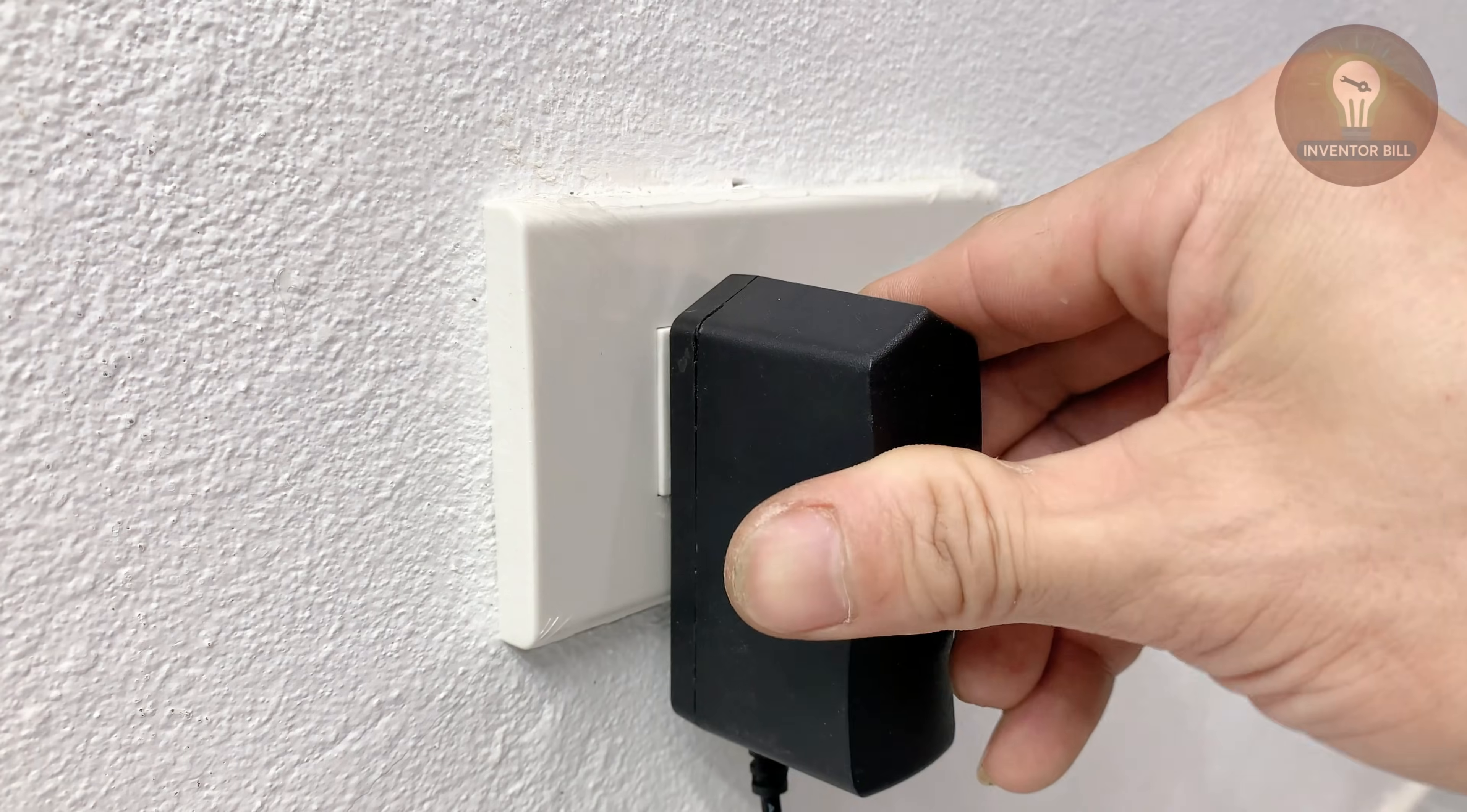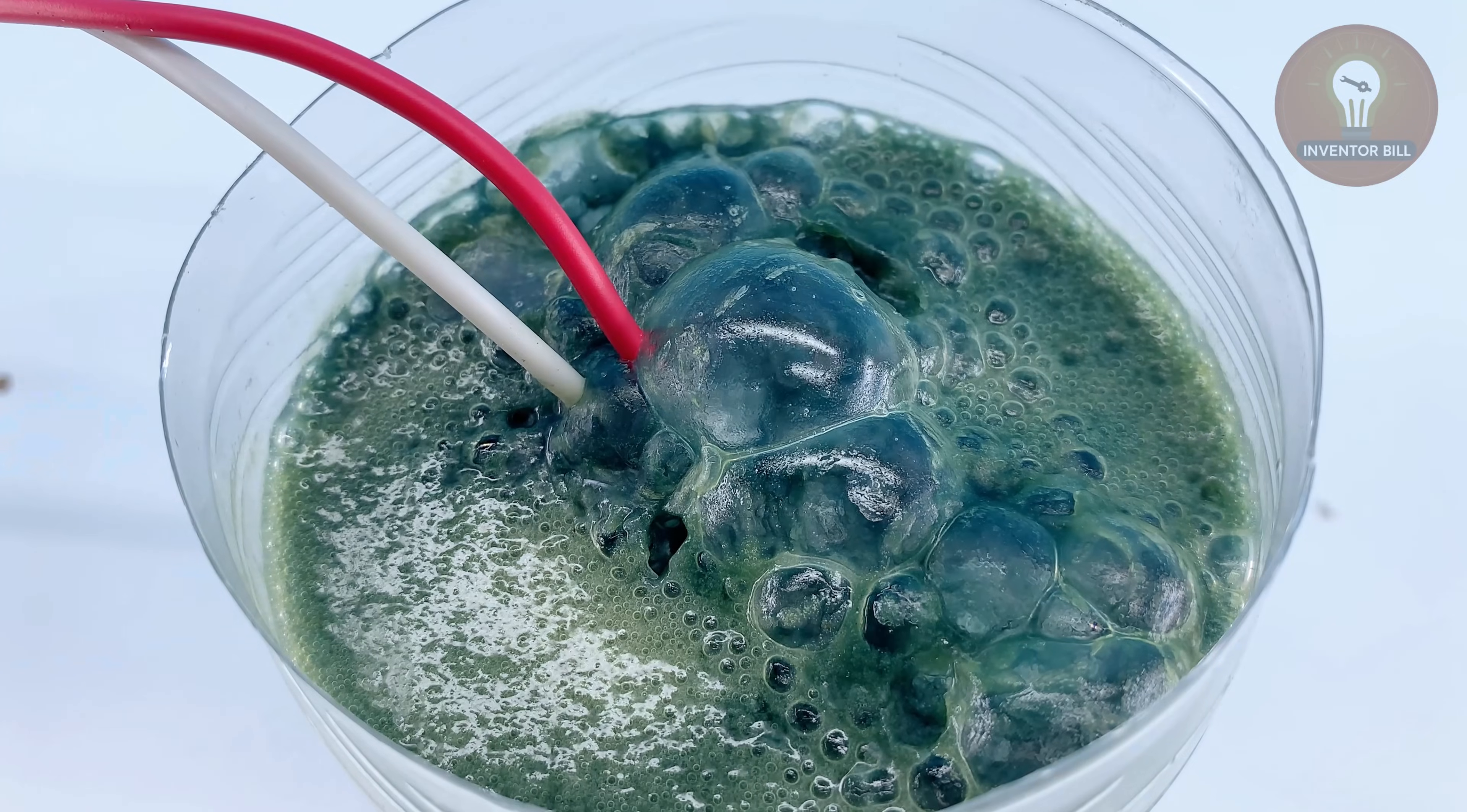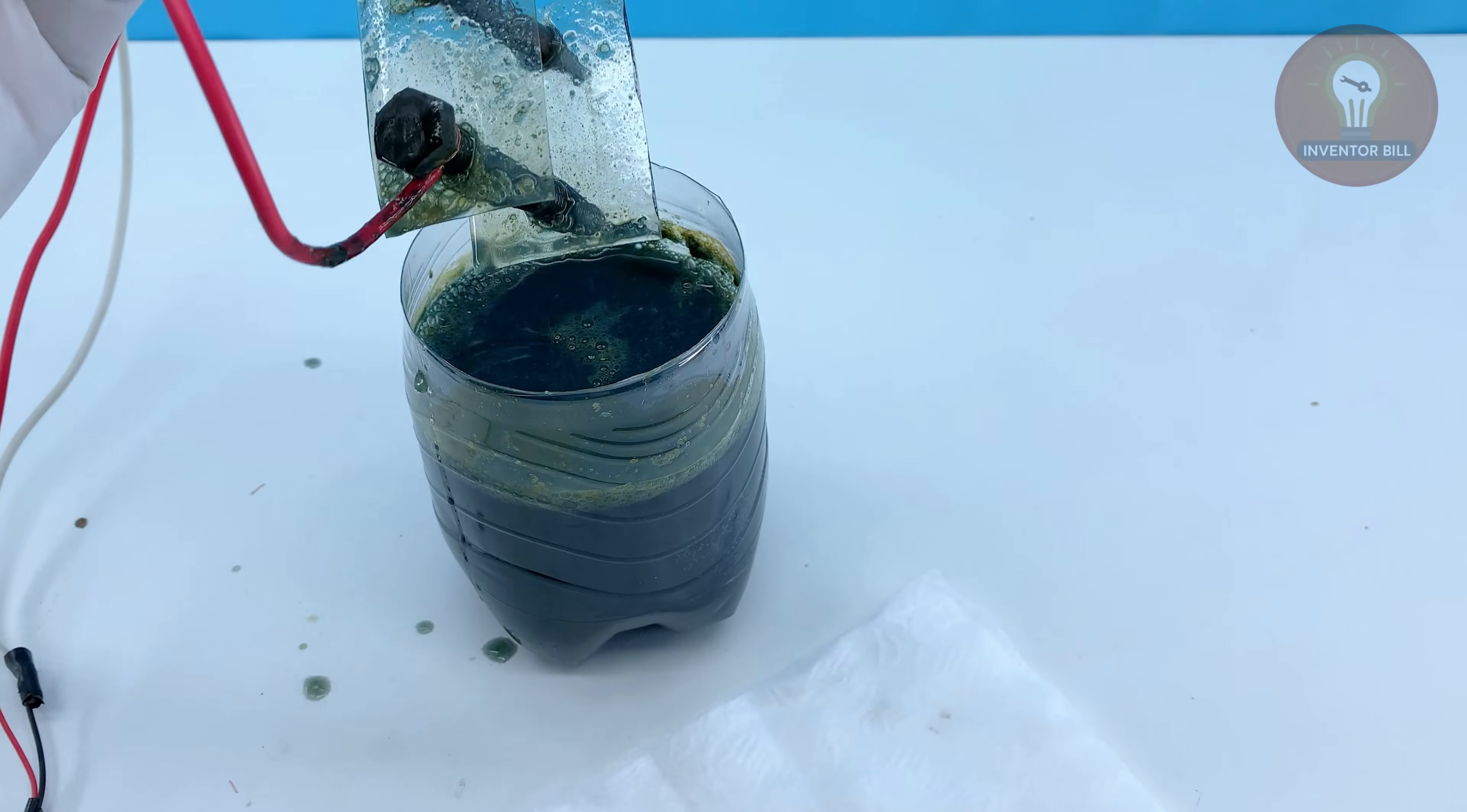Once you're sure the connections are solid, lower both the soldering tip and the screw into the cup of salt water. Then plug in the charger. You'll start to see tiny bubbles forming around the soldering tip—that means electrolysis is working. The current is gently cleaning away the oxidation and burnt residue that built up over time. Let it run for a few minutes, then unplug the charger and remove the parts. You'll notice the tip already looks cleaner and shinier, ready for the final polish.